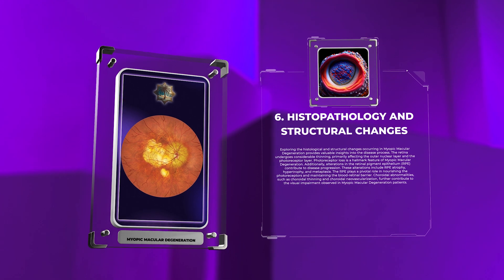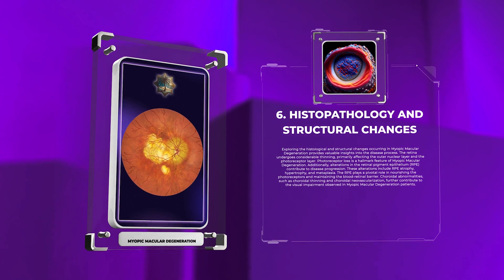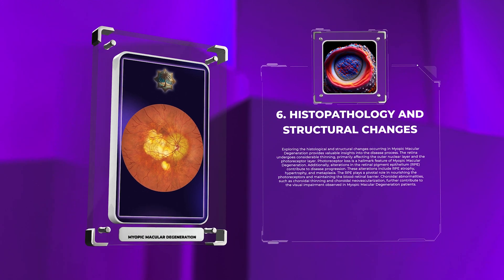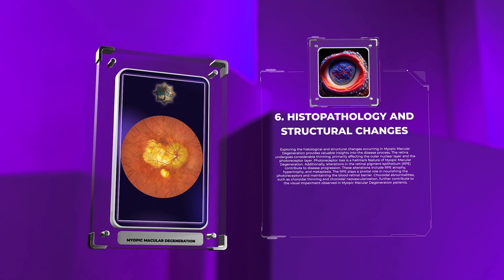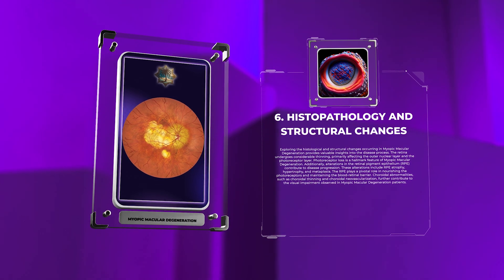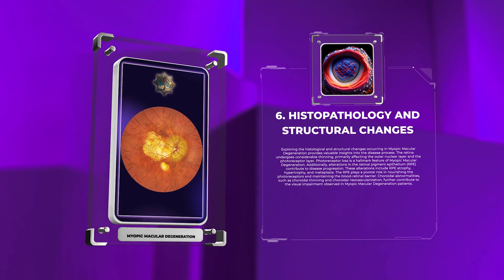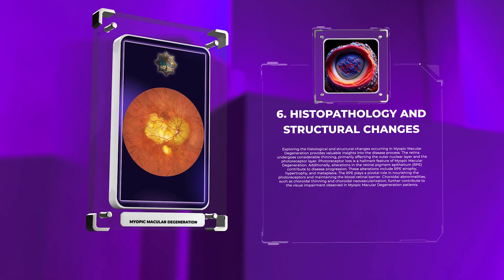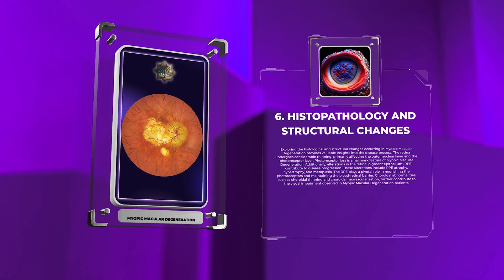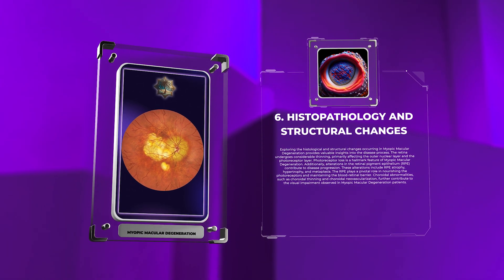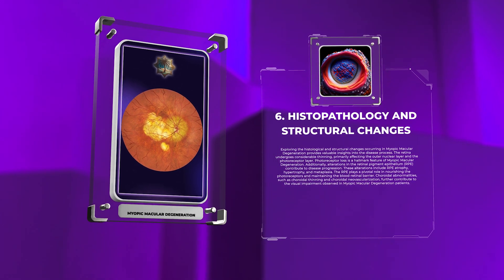Photoreceptor loss is a hallmark feature of myopic macular degeneration. Additionally, alterations in the retinal pigment epithelium (RPE) contribute to disease progression. These alterations include RPE atrophy, hypertrophy, and metaplasia. The RPE plays a pivotal role in nourishing the photoreceptors and maintaining the blood-retinal barrier. Choroidal abnormalities, such as choroidal thinning and choroidal neovascularization, further contribute to the visual impairment observed in patients.